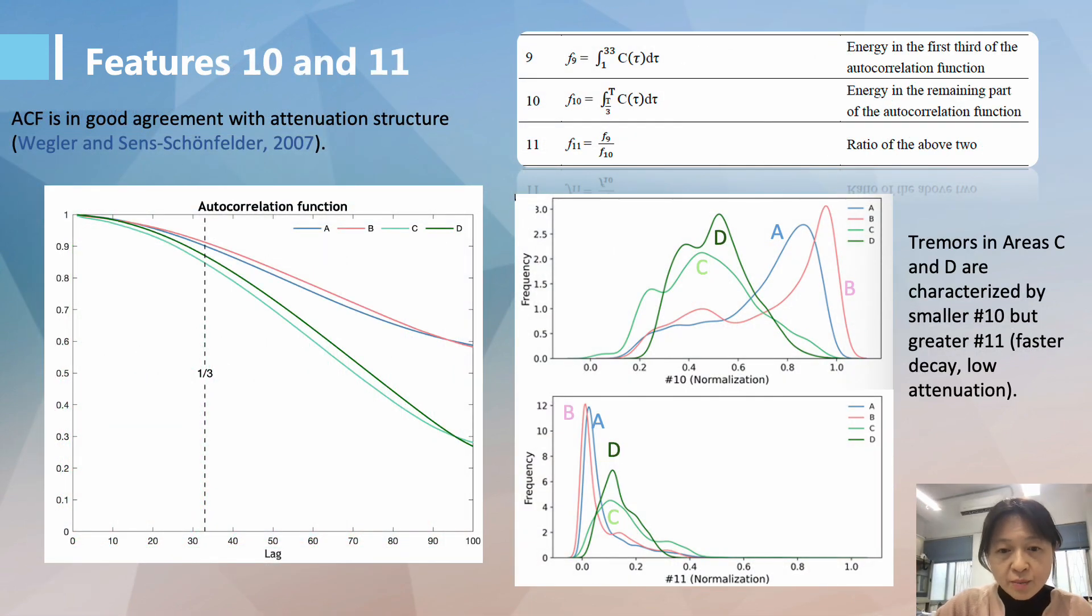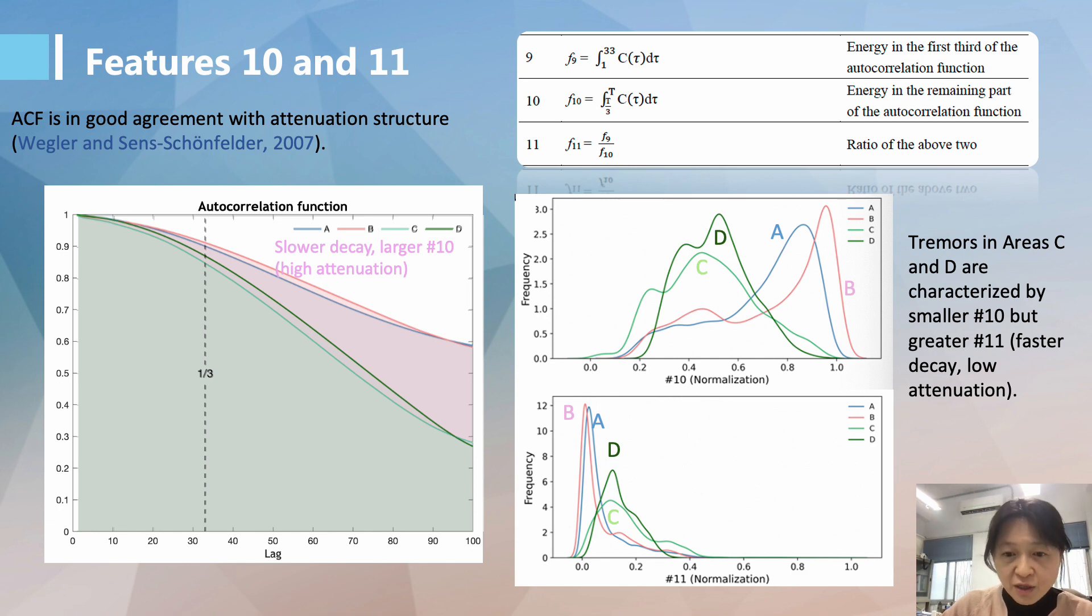The features number 9, 10, and 11 are all associated with autocorrelation function. Given that the decay rate of the autocorrelation function is in good agreement with the attenuation structure, low attenuation allows more high-frequency spikes, and therefore faster decay on the autocorrelation function.